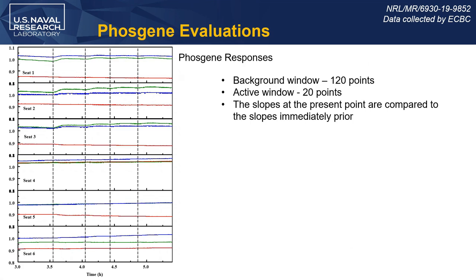This is data from a phosgene evaluation. We have lots of outdoor data that's published; this data was just recently collected and we had to tweak our algorithm for these independent tests. The Army tested us against a number of TIC/TEM targets and also against some live agent — something we can't do at NRL. Their conditions required us to cut warm-up time to less than half an hour, meaning the 120-point background window, 20-point active window, and 10-point snap window all had to be populated in under half an hour. We also had to shorten the cool-down window from 60 minutes to five minutes.